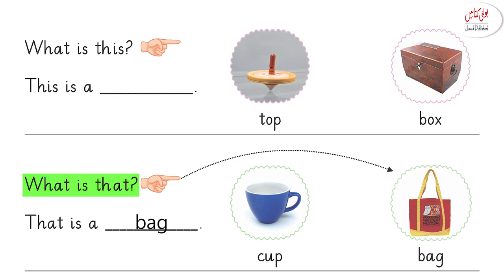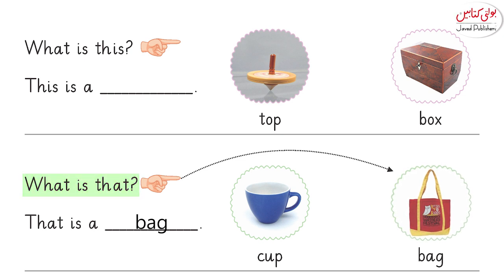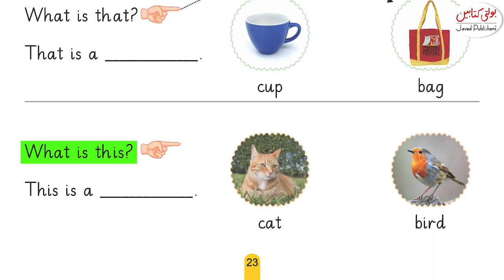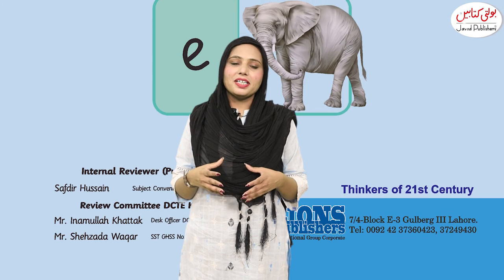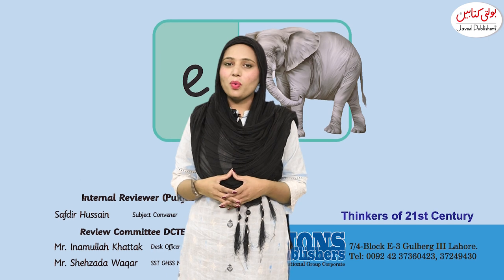What is that? That is a back. The back is far from us, that's why we select this option. What is this? Yes, this is a cat. The cat is nearby us, that's why we use this option. Very good!